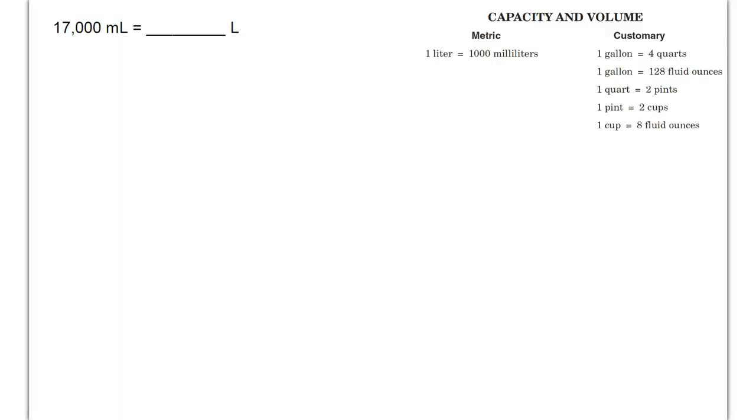In this lesson we will look at the conversion of metric units of capacity and volume. The question states that 17,000 milliliters is equal to how many liters? The first thing I want you to do is to underline the units that we're working with, so milliliters to liters.